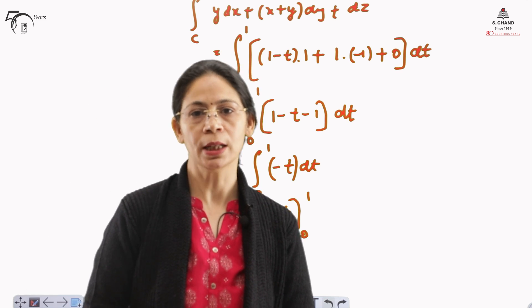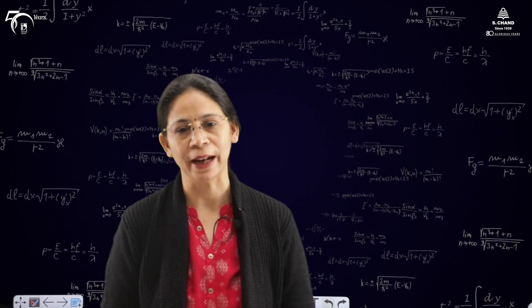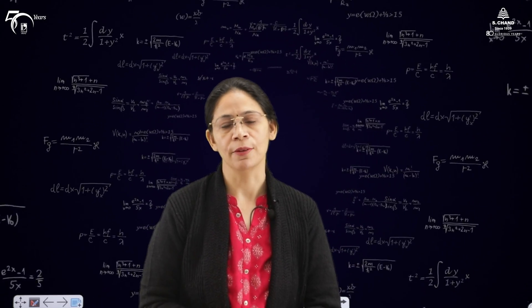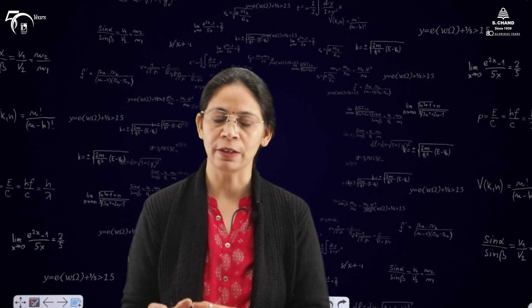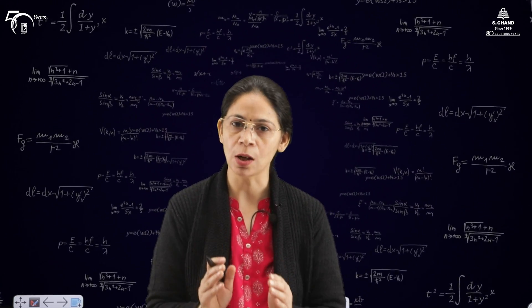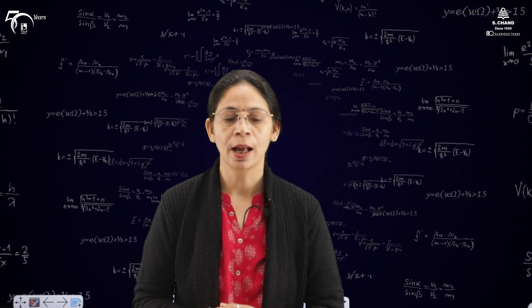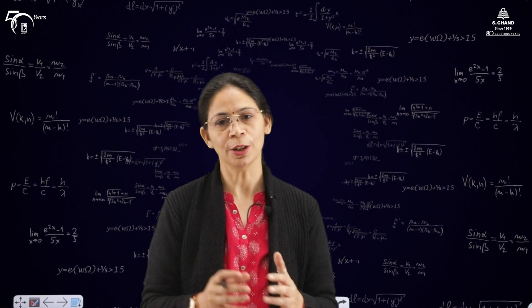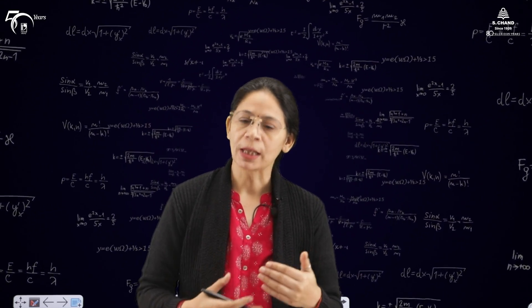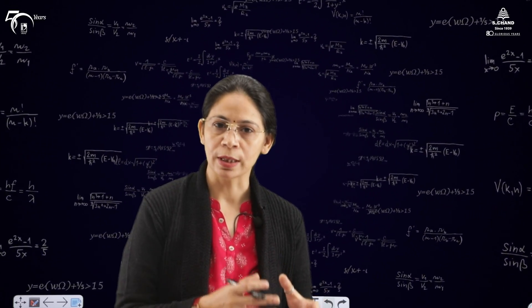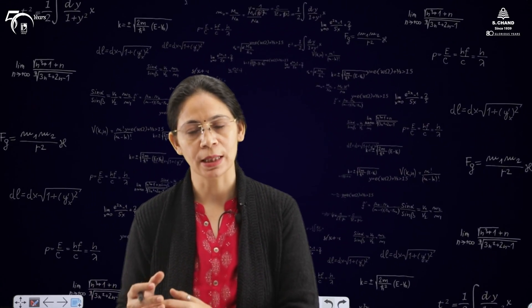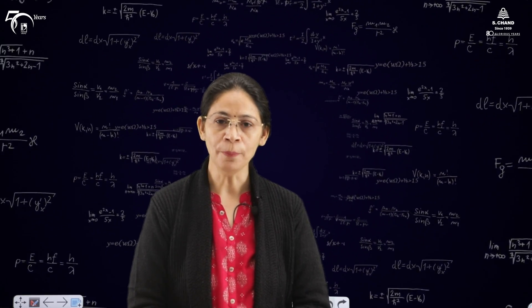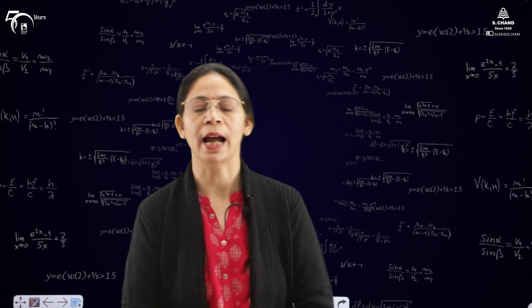In this part of the video we have learned the line integral of a vector valued function. A vector valued function can be integrated as the integral over C of F dot dS. We studied two forms: F1·dX plus F2·dY plus F3·dZ, where F1, F2, F3 are components of F in i, j, k directions and are functions of X, Y, Z; and the parametric form, converting to F1·(dX/dT) plus F2·(dY/dT) plus F3·(dZ/dT) integrated with respect to T. We solved one example using the parametric form.